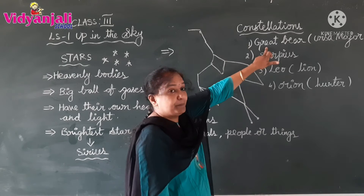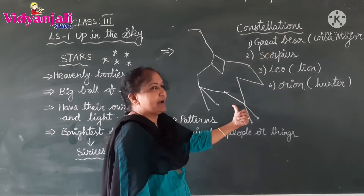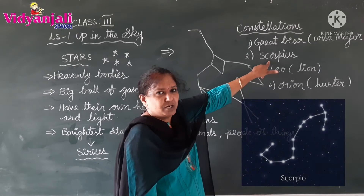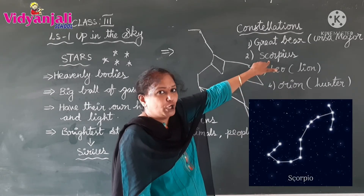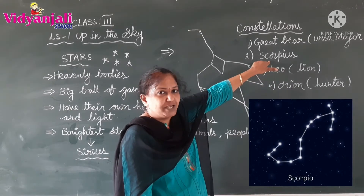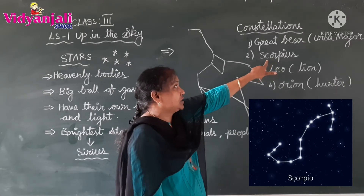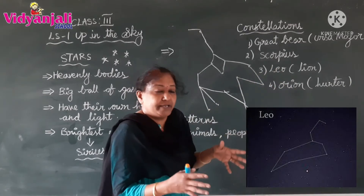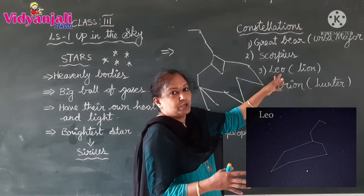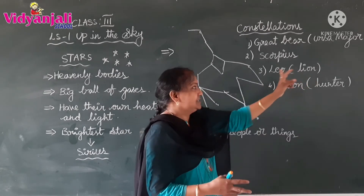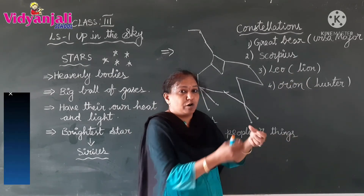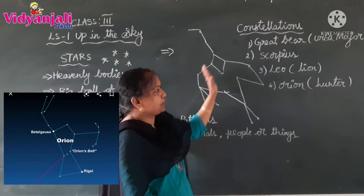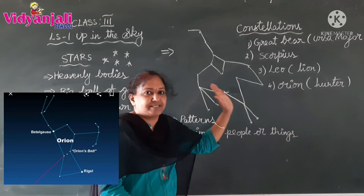For example, sometimes they are looking like a great bear — that is known as Ursa Major. Sometimes like Scorpius — Scorpius is the scorpion. Sometimes the stars are looking like a lion, called Leo. Sometimes they are looking like Orion, which means hunter. These are the patterns we can see in the night sky.